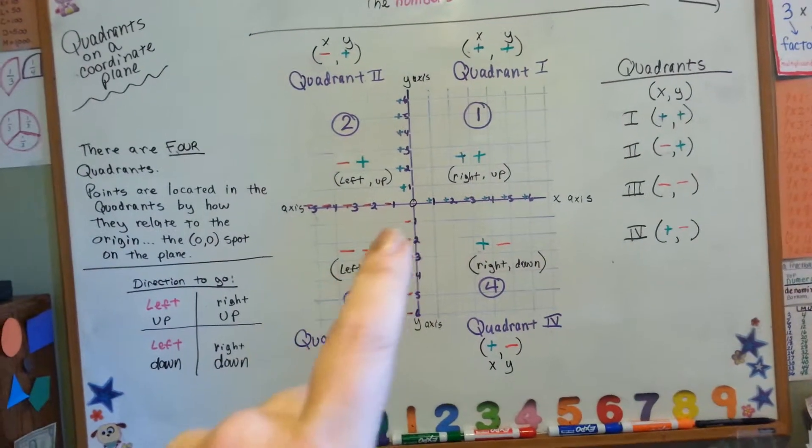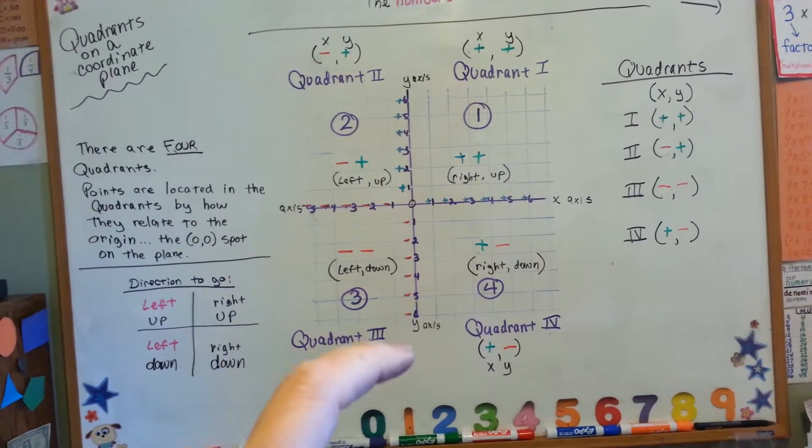For quadrant 3, you go to the left and down. 1, 2, 3, 4, 5, 6, and 1, 2, 3, 4, 5, 6.